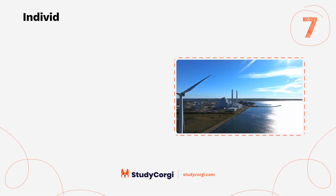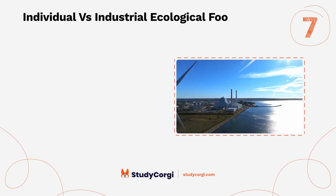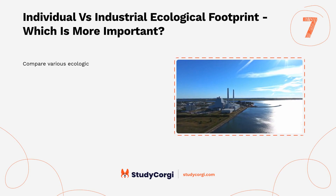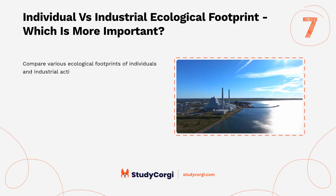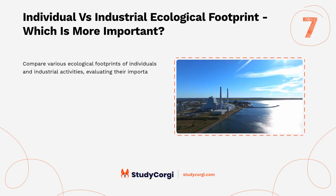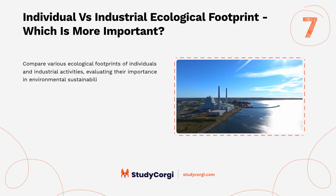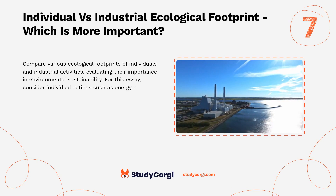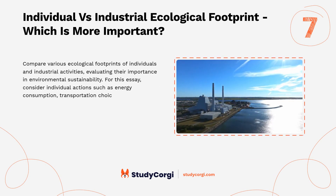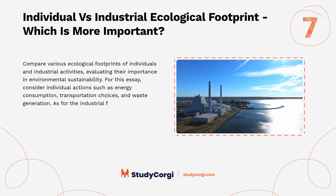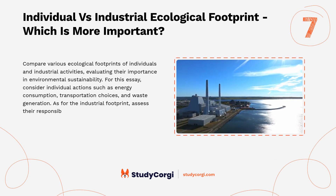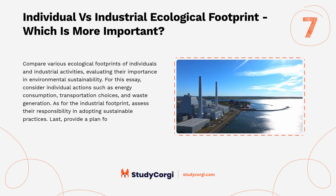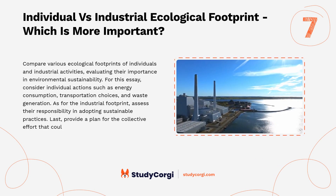Topic seven: individual versus industrial ecological footprint — which is more important? Compare various ecological footprints of individuals and industrial activities, evaluating their importance in environmental sustainability. Consider individual actions such as energy consumption, transportation choices, and waste generation. For the industrial footprint, assess their responsibility in adopting sustainable practices. Finally, provide a plan for the collective effort that could bring systemic changes.